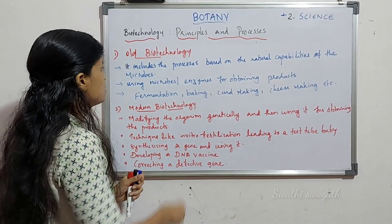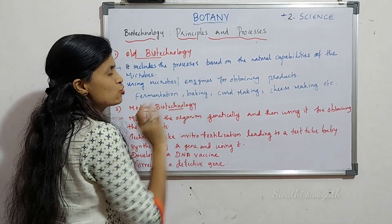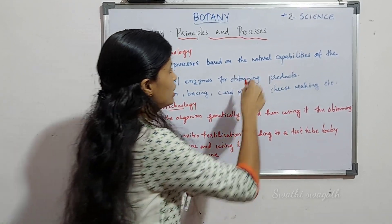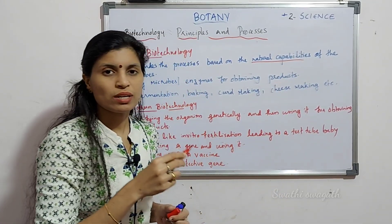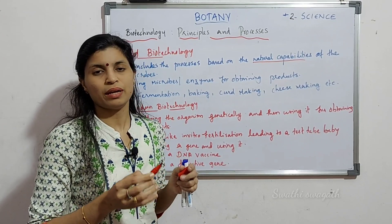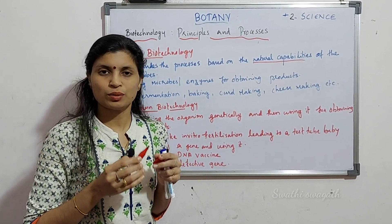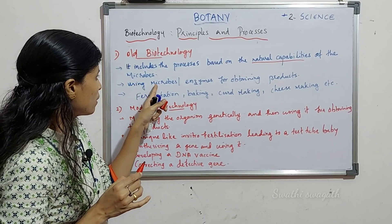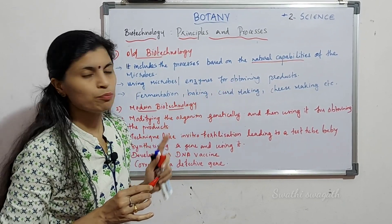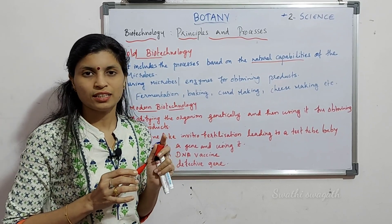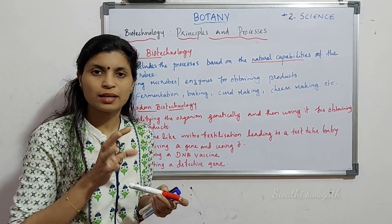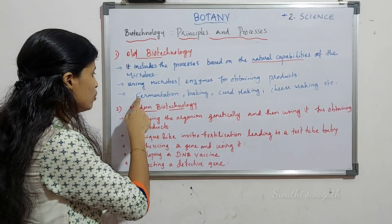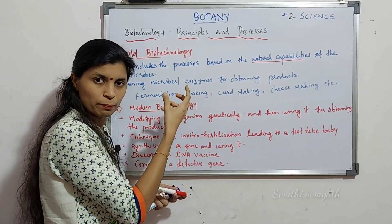Old biotechnology includes processes based on the natural capabilities of the microbes. We are not doing anything artificially — we use microbes or enzymes for obtaining products using their natural abilities. Examples include the fermentation process and the food baking process.